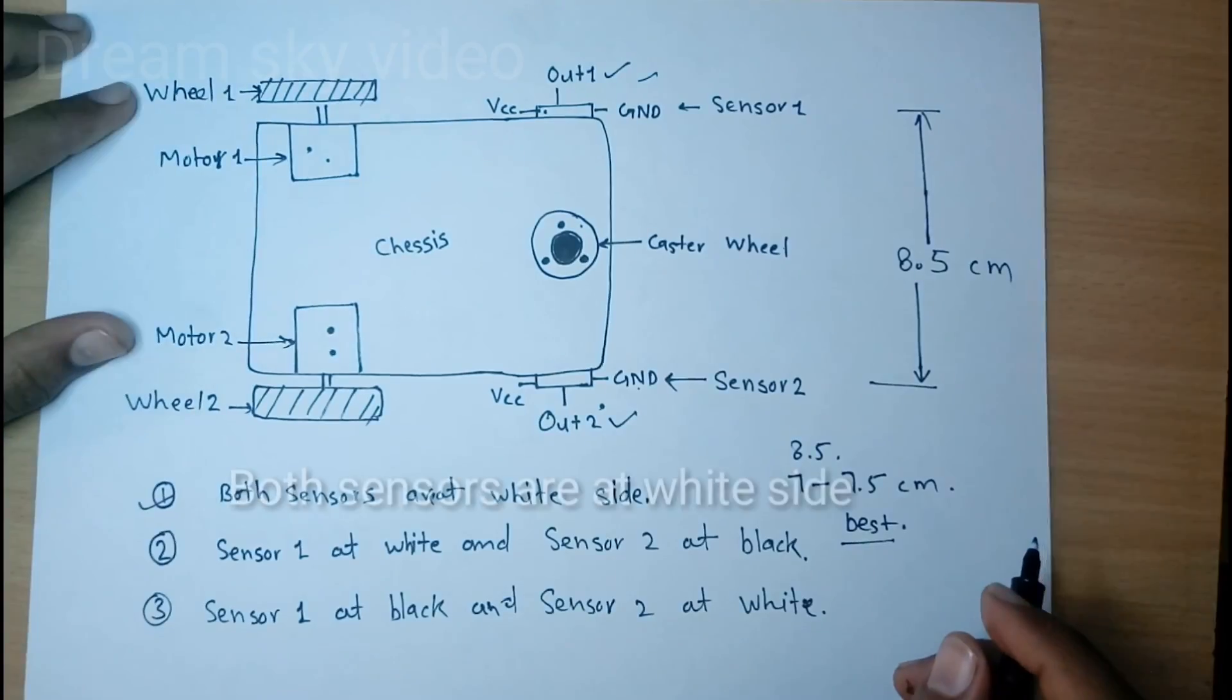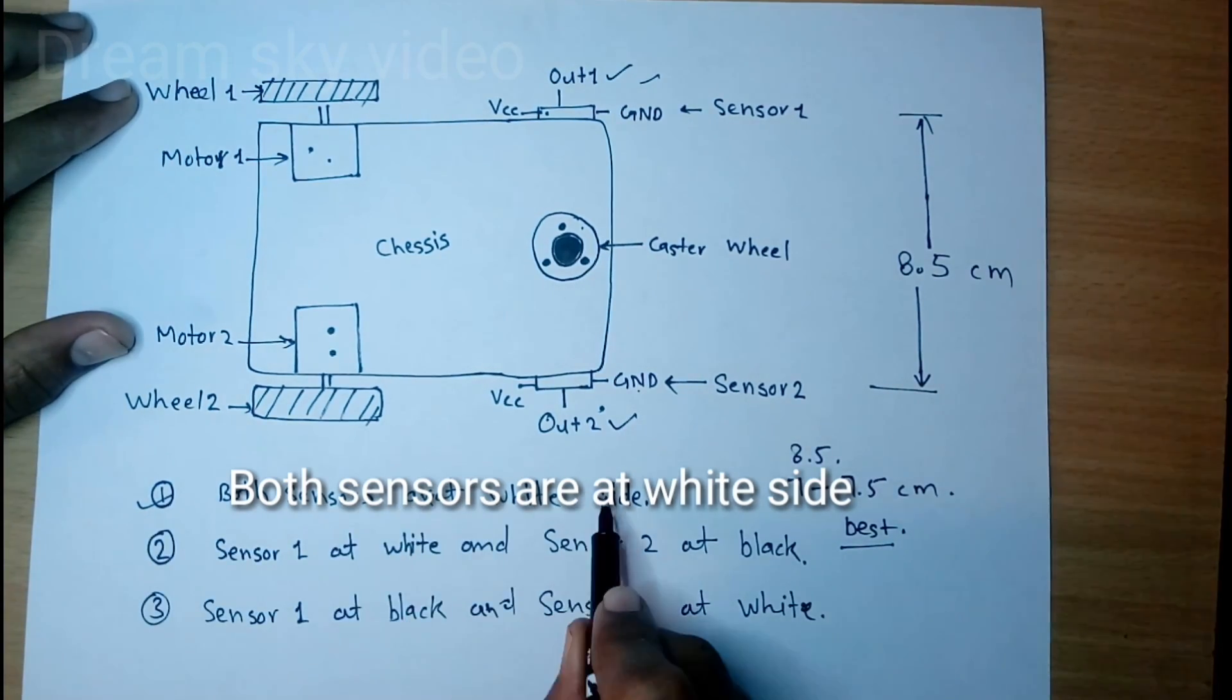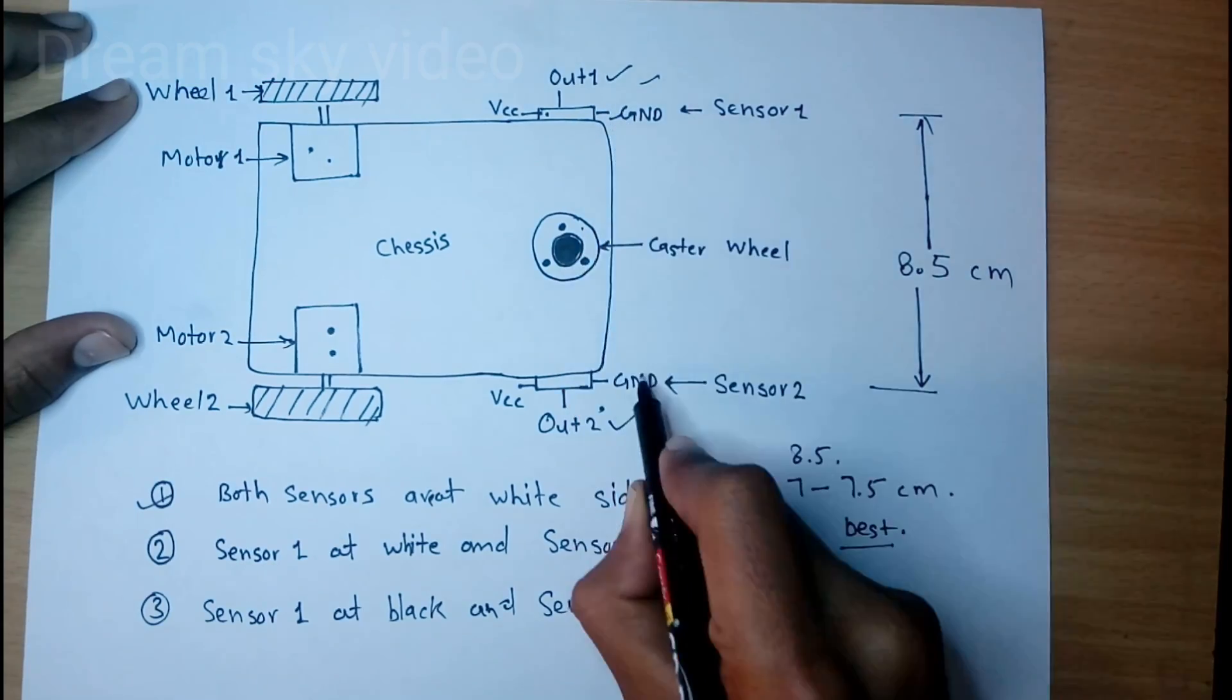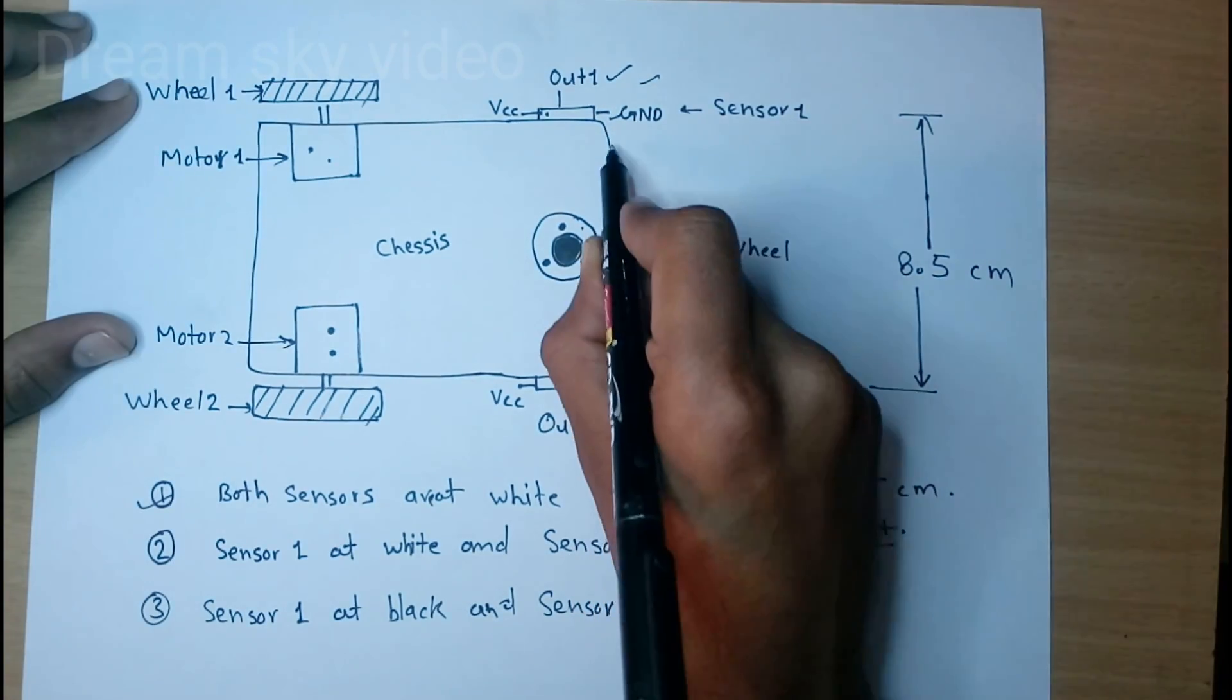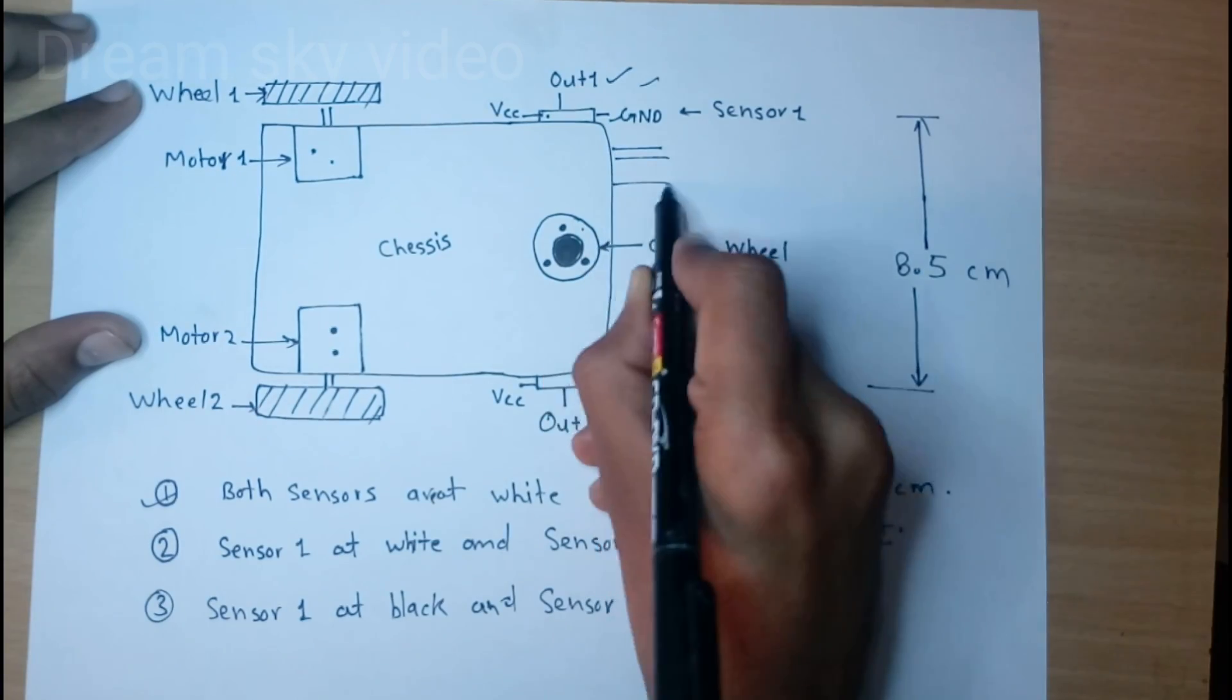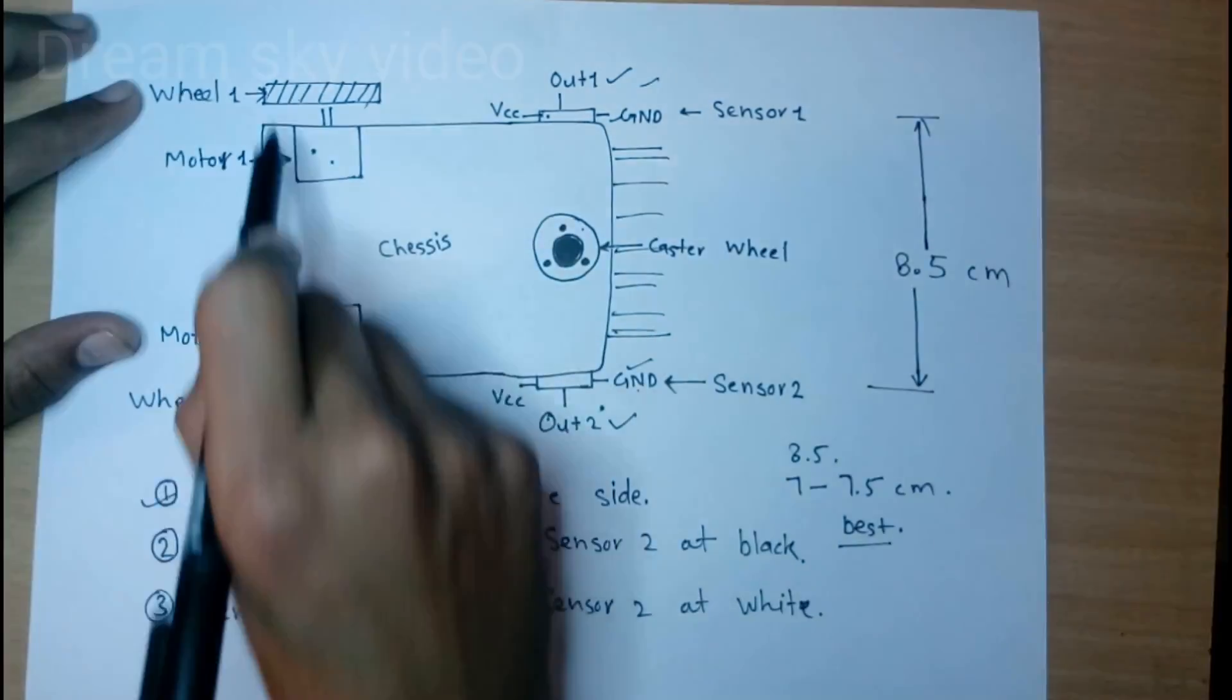Here we look three conditions. First is both sensors are right side. In this condition this sensor at right side and this sensor at right side and line is middle of this sensor, then both motors rotate forward direction and this robot moves in forward direction.